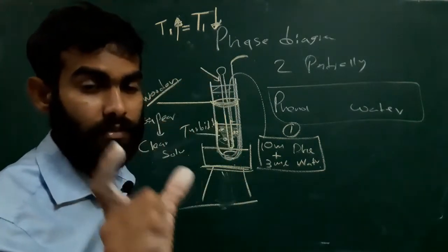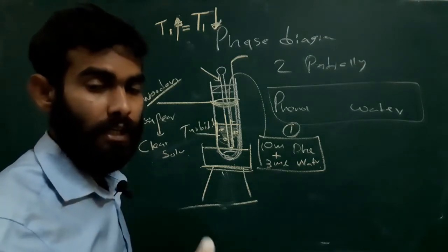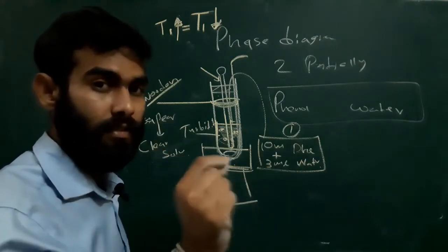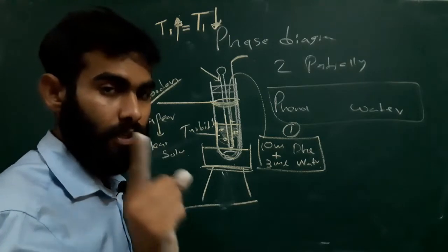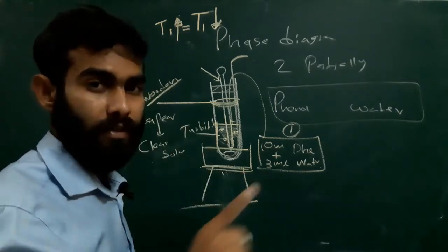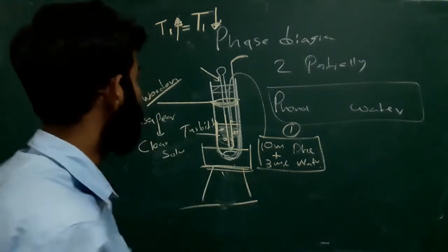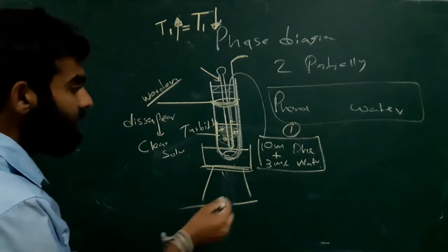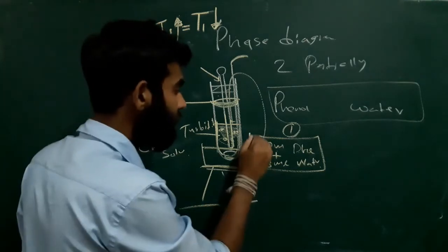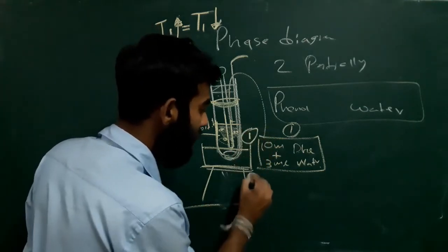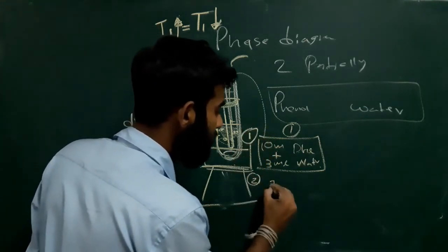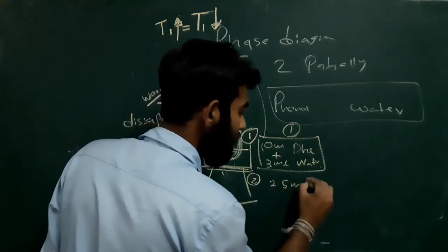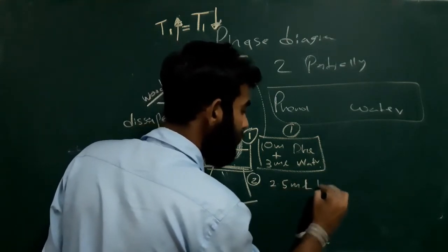The two temperatures — heating disappearance and cooling reappearance — should be the same. If they are not the same, that means you made a personal error. These two temperatures should be same. After getting this first reading, we will add 2.5 ml of water.